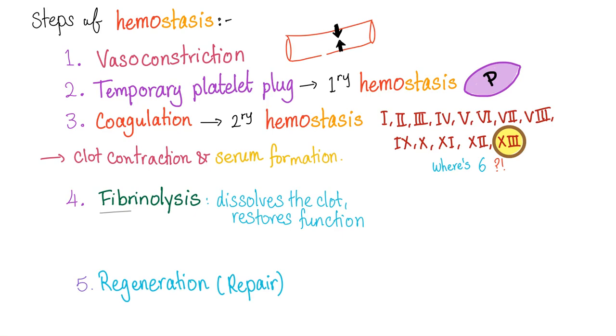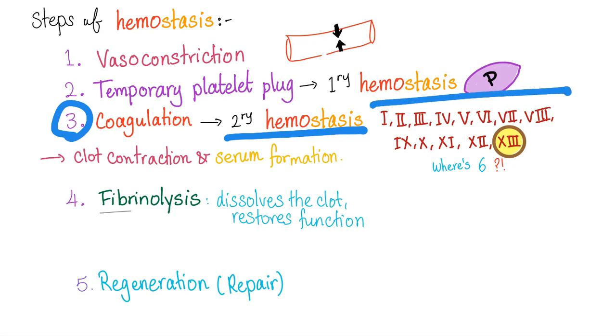Today we're talking liver disease. Where do you think the problem is? The coagulation cascade — secondary hemostasis — because most of the factors come from the liver.